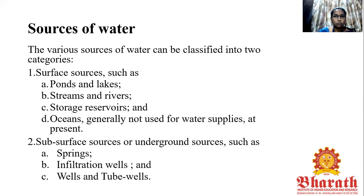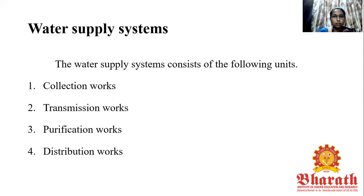The reason we discuss these sources is that the first and foremost work under the water supply system is selecting an appropriate source where water is available continuously and also the quality of the water should be somewhat good so that we can go for treatment and supply the water to the public. Under water supply system, we have the following units of works: the first is collection works, the second is transmission works, the third is purification works, and the fourth is distribution works.